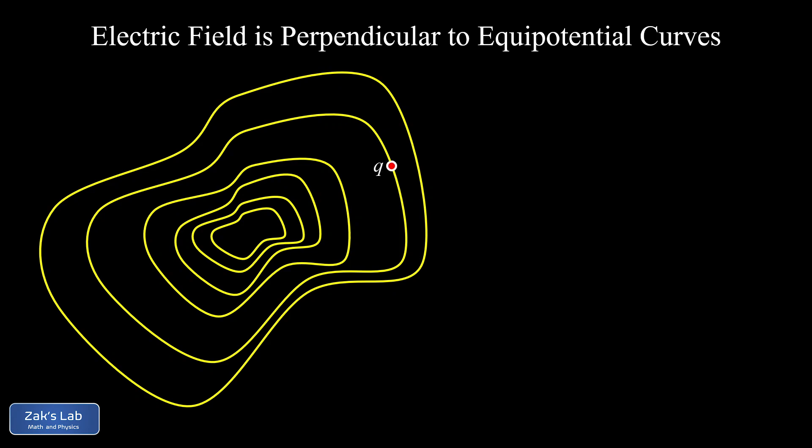So as a charge of Q wanders around on a particular equipotential curve here, it's staying at the same electric potential, just like if you walked around on a topo line, you'd stay at the exact same elevation. Now, the key to the derivation here is that the electric potential energy is constant along the equipotential curve, just like the gravitational potential energy is constant if you were walking around on a topo line on a map.